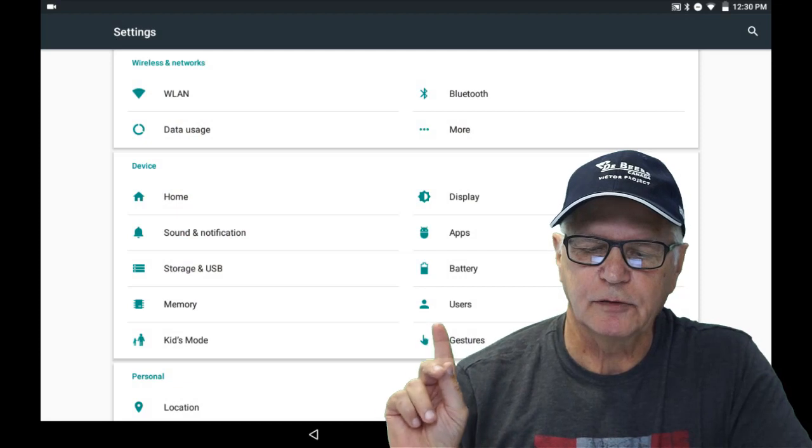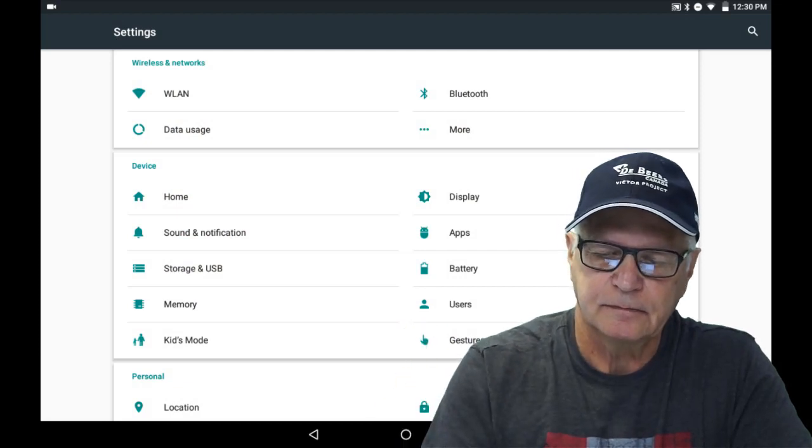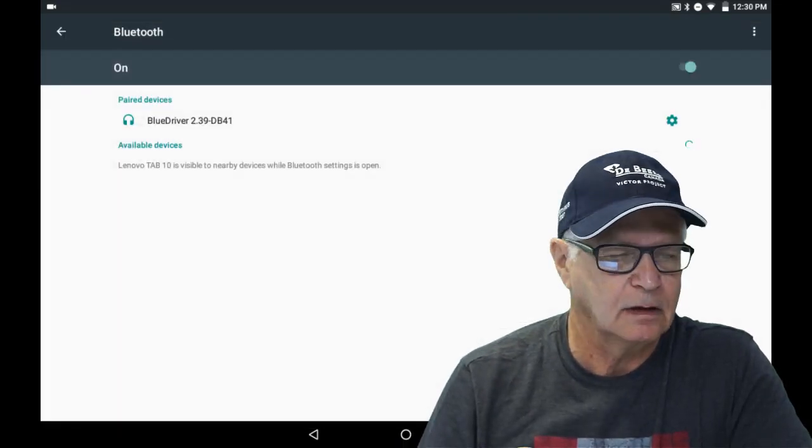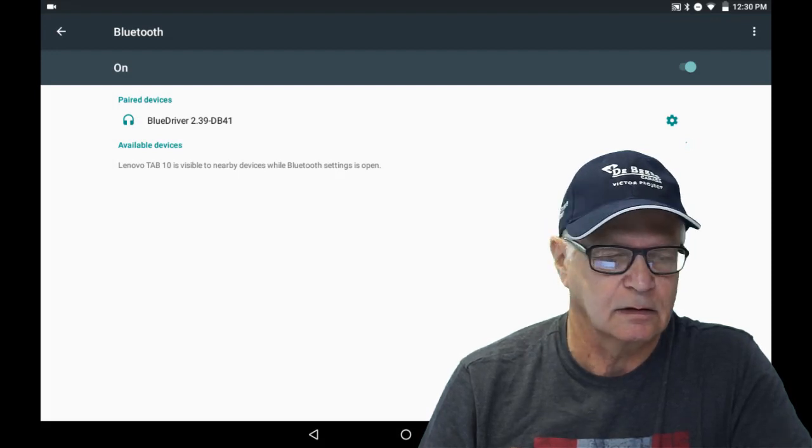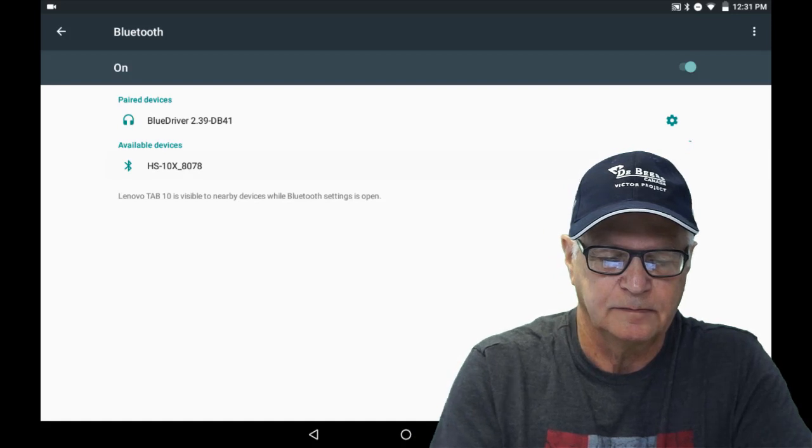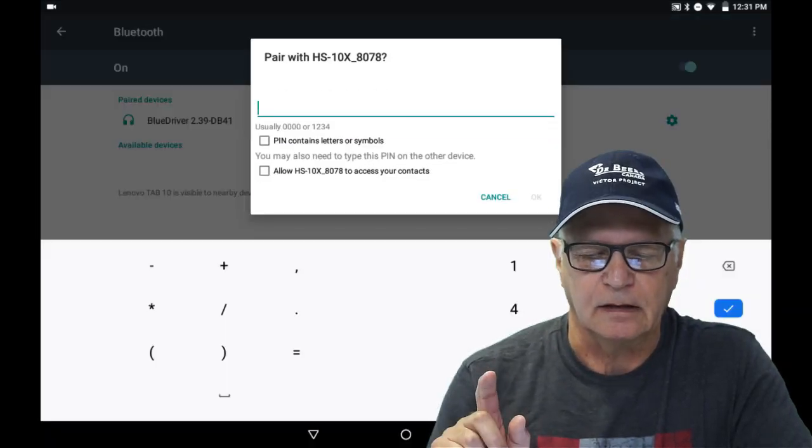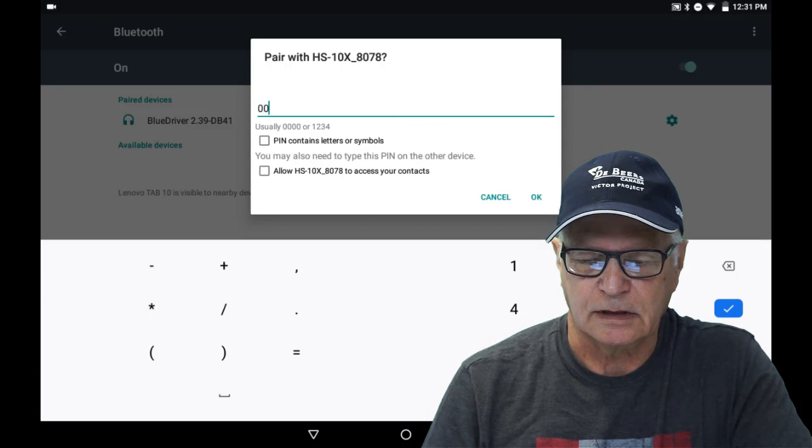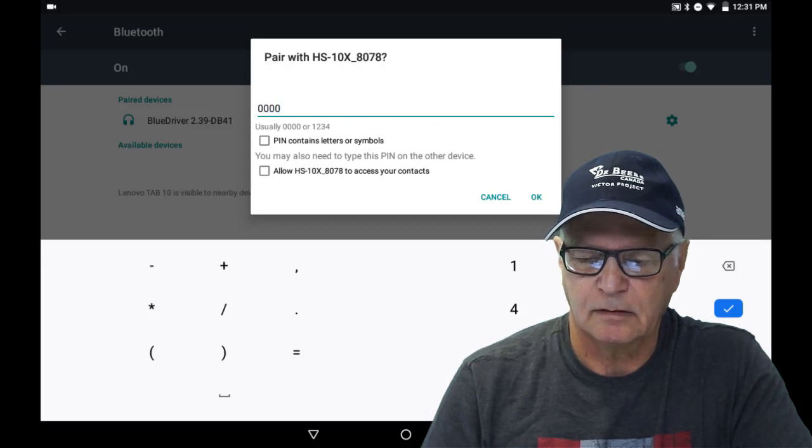So now if we go to the Bluetooth settings in our Android phone or tablet, the device should be discoverable. The pin is 0 0 0 0.